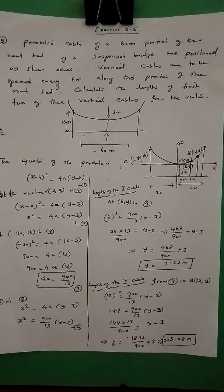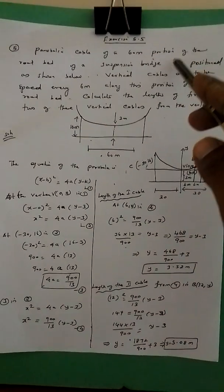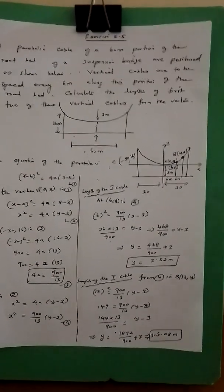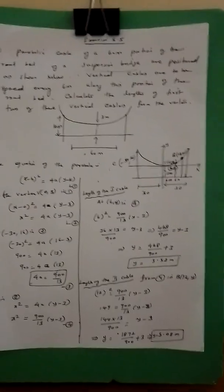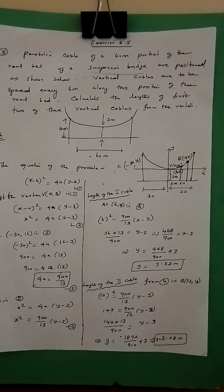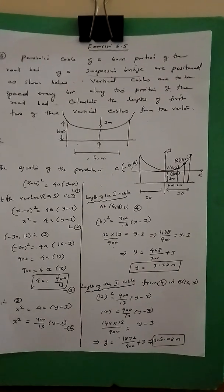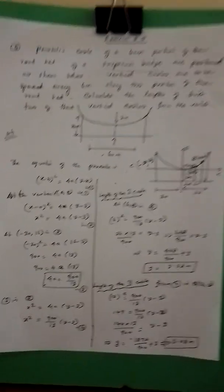Exercise 5.5, Sum No. 5. A parabolic cable of a 60-meter portion of the road bed of a suspension bridge is positioned as shown. Vertical cables are to be spaced every 6 meters along this portion of the road bed. Calculate the length of the first two of these vertical cables from the vertex.